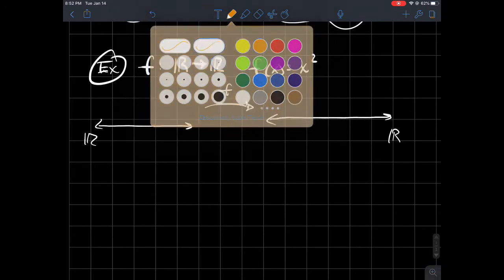Something like zero definitely gets sent to zero, so I'll try to label them the same color. Also something like one definitely gets sent to one over here, but then minus one also gets sent to this point one when I square it.